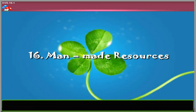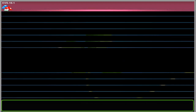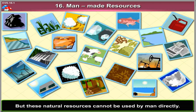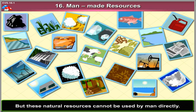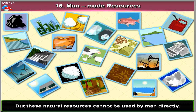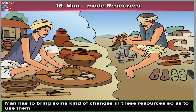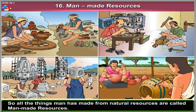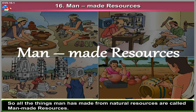Chapter 16: Man-Made Resources. We get different kinds of natural resources, but these natural resources cannot be used by man directly. Man has to bring some kind of changes in these resources so as to use them. So all the things man has made from natural resources are called man-made resources.